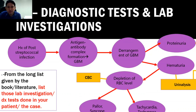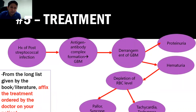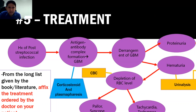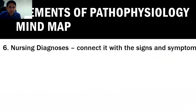For treatment, you affix only the treatments ordered by the doctor for your patient — not everything listed in the books. For example, because of the antigen-antibody complex formation, the doctor may order corticosteroids and plasmapheresis. Add the diagnostic tests and laboratory investigations ordered by the doctor, then add the treatments involved.